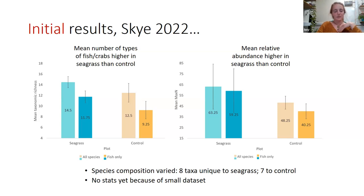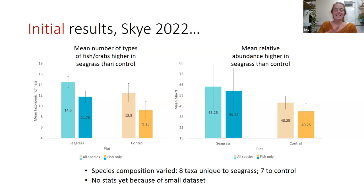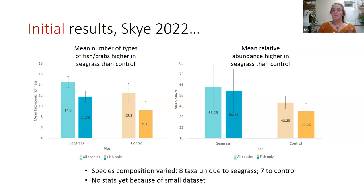I haven't been able to do statistics on this yet because the number of repeats is so small, but once I've analyzed the data from this year I should be able to. I also want to note that species composition was quite different between seagrass and control — I found eight taxa only in the seagrass and seven only in the control, showing that seagrass is supporting some unique species you just don't tend to see in sandy areas. Interestingly, it's harder to spot species in seagrass, which actually makes the results more robust.